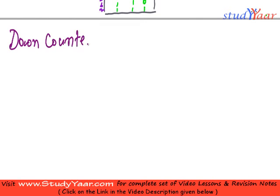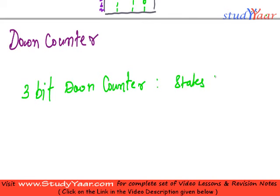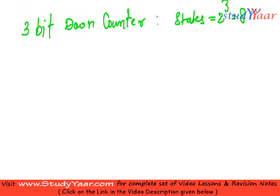Down counter. Again we are going to talk about a 3-bit counter over here. You can anyways extend it to 4-bit, 5-bit, whatever you like. So 3-bit is going to have a number of states equal to 2 raised to 3 which is 8. Let's see how it looks.